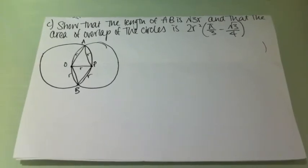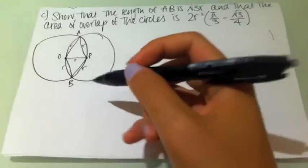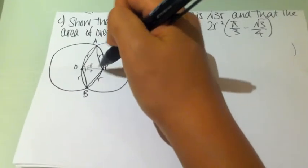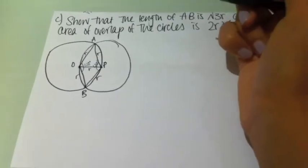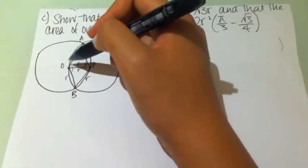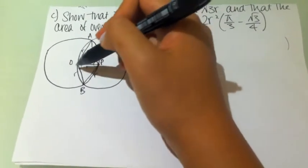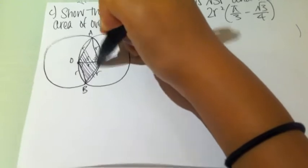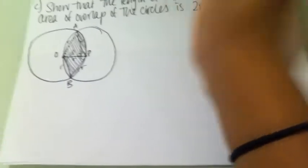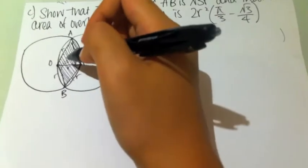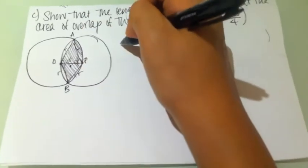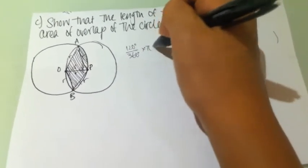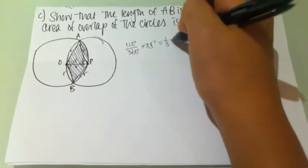Now I'm going to show the area of the overlap of the circles. We've already established that angle AOB is 120 degrees, which means angle APB is also 120 degrees. In order to find the area of the overlap, I'm going to find the sector area of AOPB from O. Using the sector area formula, this is 120 degrees over 360 degrees times πr², which equals one third πr².